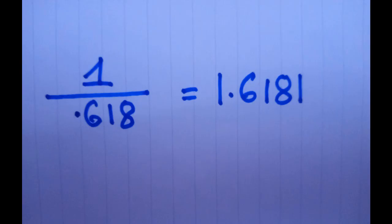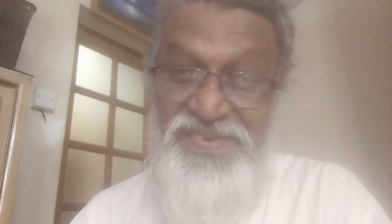So we have two numbers: the chapter number of Surah Fatiha, which is 1, and the mathematical value of its 7 verses, which is 0.618. The golden ratio is defined as the ratio of two numbers where dividing the larger by the smaller gives 1.618. If we divide 1 by 0.618, we get 1.6181, which is the golden ratio. Therefore, Surah Fatiha itself belongs to the golden ratio.